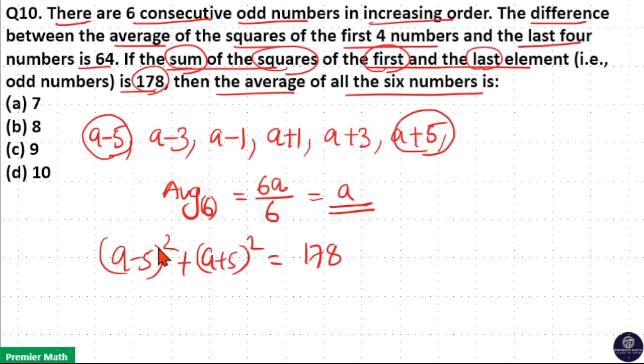Now you can see here 2 times -5 times a, that is -10a. Here 2 times 5 times a, +10a. So -10a and +10a cancel. Remaining is a² + a², that is 2a², plus here 5² + 5², 25 + 25, that is 50. So 2a² + 50 = 178.